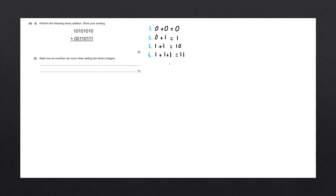And the last rule is that 1 plus 1 plus 1 is equal to 11. We can get this by taking the third rule and adding 1 to 10. 11 in denary is equal to 3.